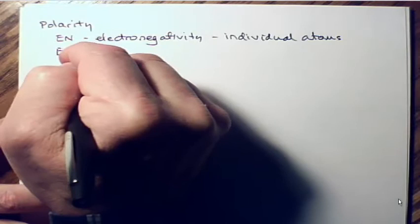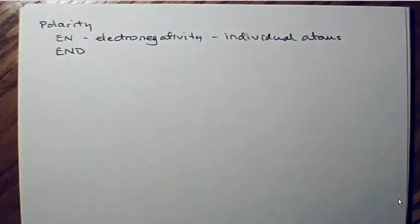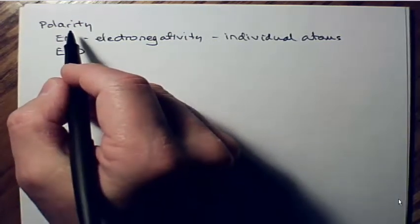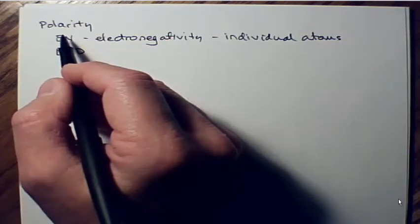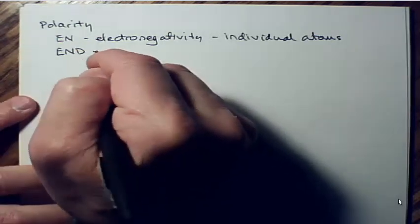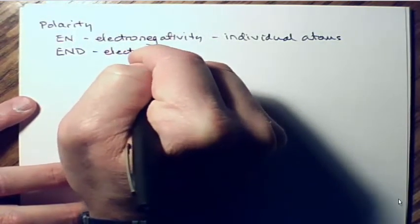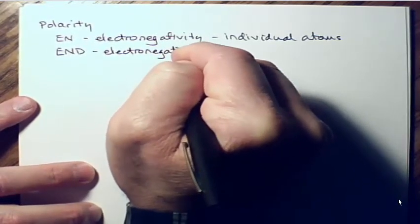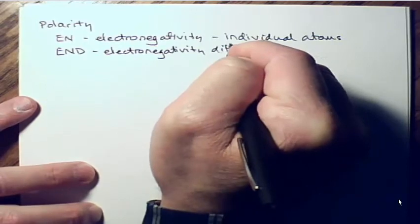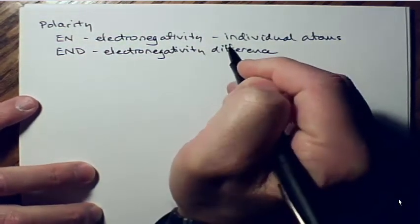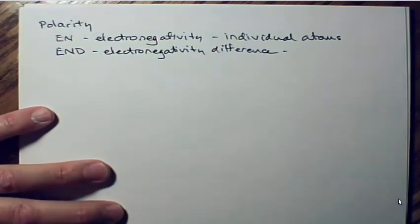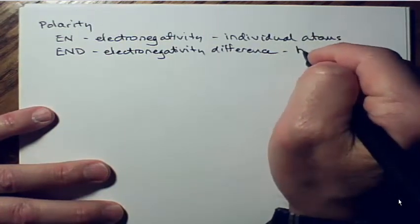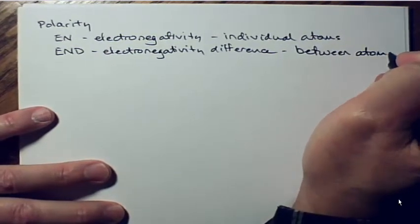When we're talking about polarity, we're talking about two kinds: the polarity that deals with bonds between two atoms, and the kind of polarity that exists in a molecule overall. That's where this term comes in — electronegativity difference. In math, difference means subtraction. So this is the difference in electronegativity between atoms.